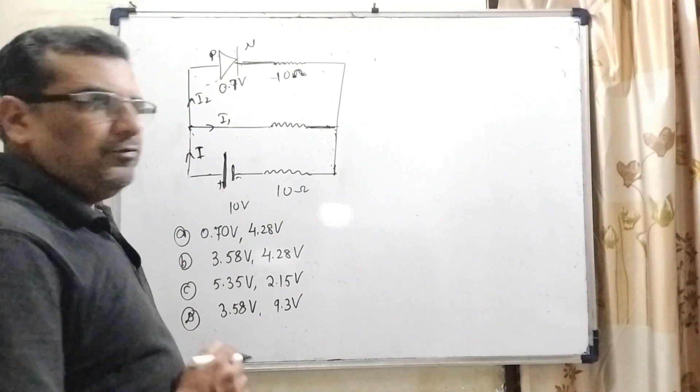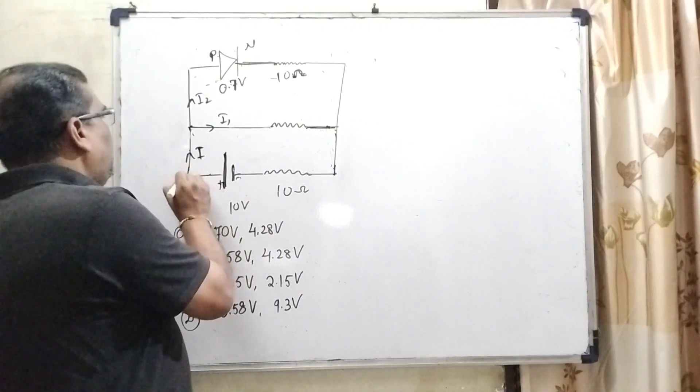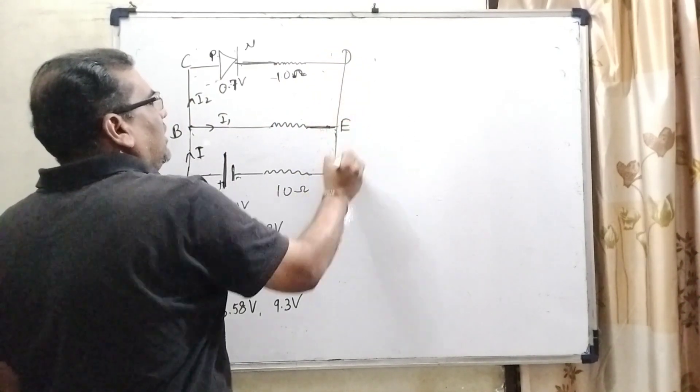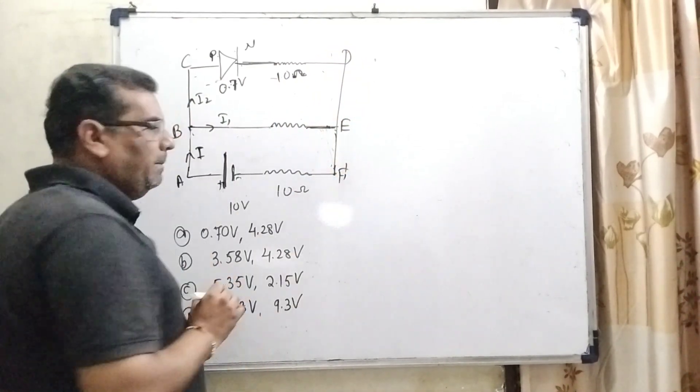Let us first label this diagram. Let us say this corner is A, B, C, D, E and F.